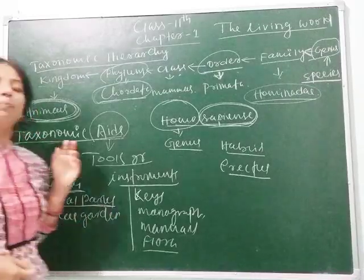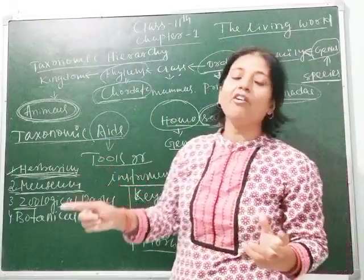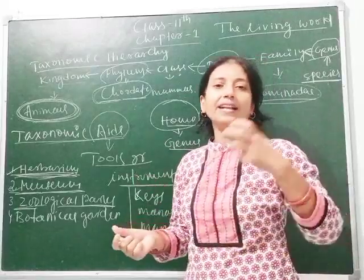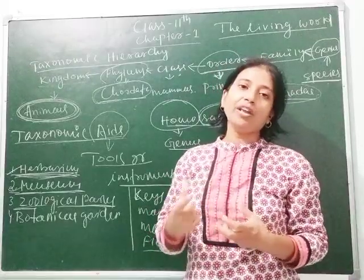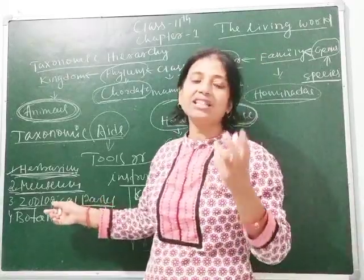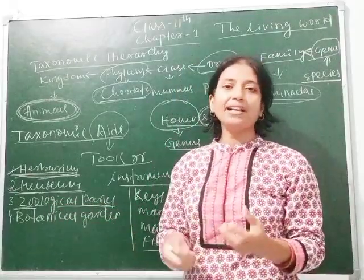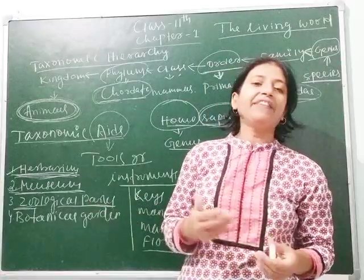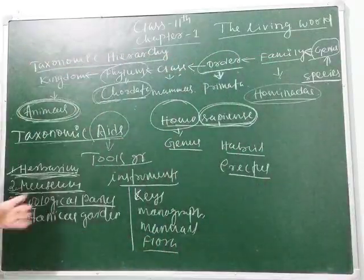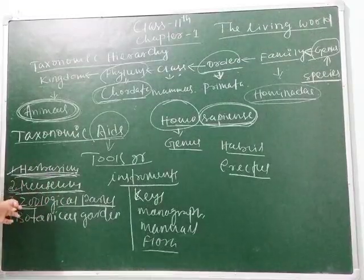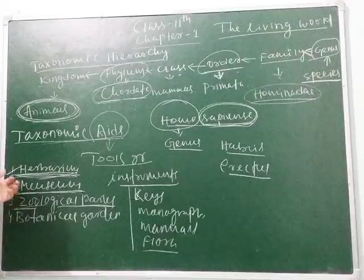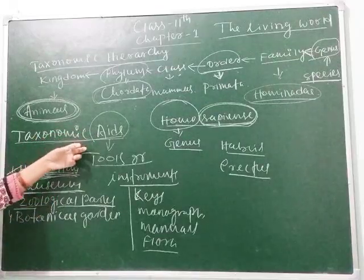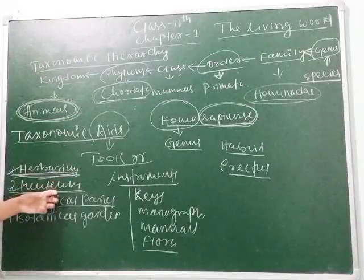Next is zoological park. Zoological parks are tools or taxonomic aids in which living organisms are protected. Those organisms that are endangered in their particular area are taken to an artificial place where natural conditions are provided and the species are grown in suitable conditions by providing a natural habitat. In a zoo, you will find different types of animals like giraffe, elephant, tiger, lion, bear, crocodile, etc. They help us study different animals, their structure and behavior.